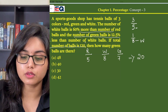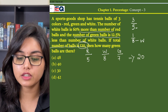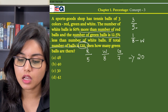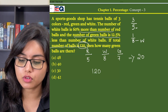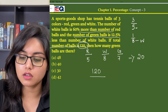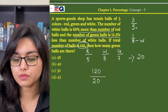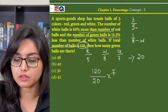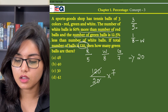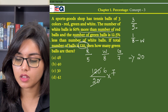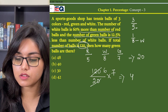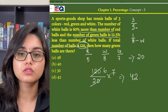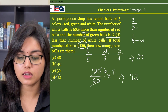The total number of balls is given as 120. To find the number of green balls, we take the given total (120) divided by the assumed total (20), multiplied by the number of green balls (7). On dividing we get 6, so 6 times 7 equals 42. There are 42 green balls, so the answer is option D.